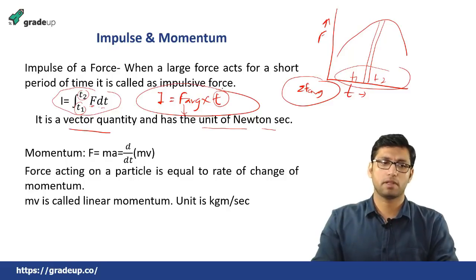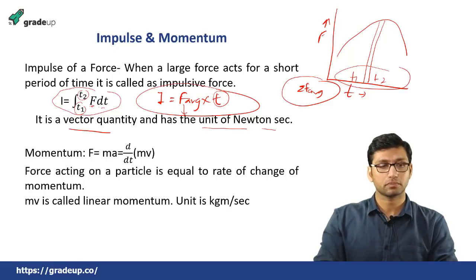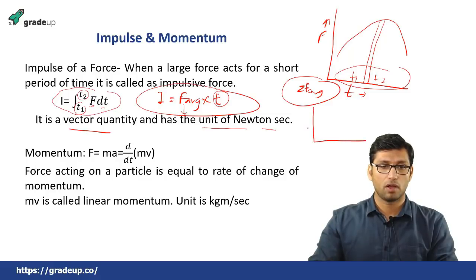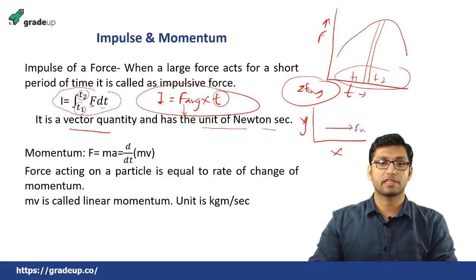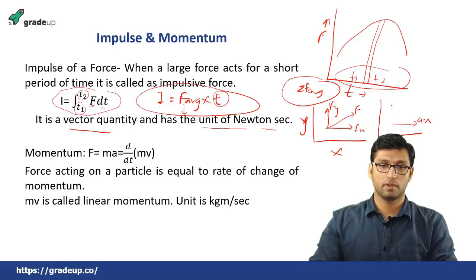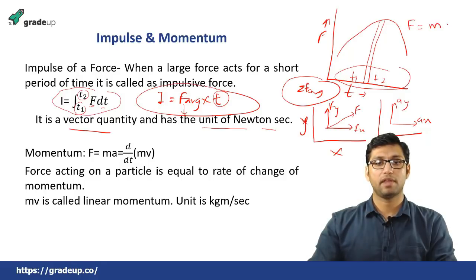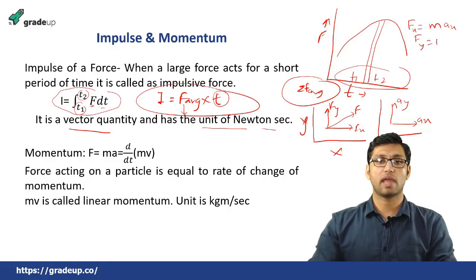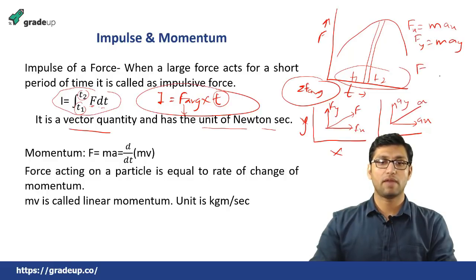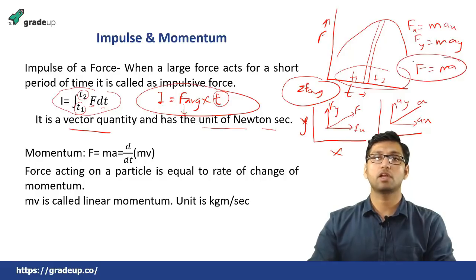Now let us understand what is momentum. Suppose that the motion is taking place in x and y coordinates. This is the force in the x direction and this is the force in the y direction. We know that Fx = M × Ax and Fy = M × Ay, and the resultant force gives F = M × A. By Newton's Second Law of Motion, F = M × A.